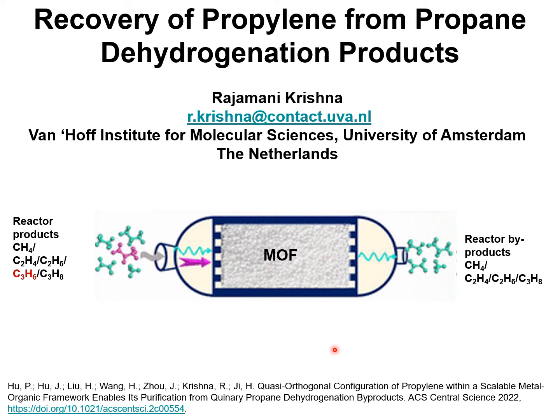In the petrochemical industries, propylene is recovered from the products from a fluid catalytic cracking unit. It could also be recovered from the products from a propane dehydrogenation reactor.